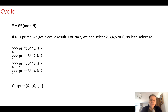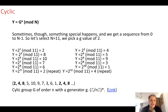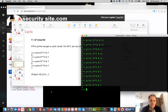Something special happens when we select a particular g value — it becomes part of a cyclic group. With this cyclic group, we get a unique output for different values of x, covering all possible values up to n minus 1 before repeating. For example: 2, 8, 10, 7, 6, 4, 5, 9, 3 — all possible values — then it repeats. This is a cyclic group of order n with generator g.